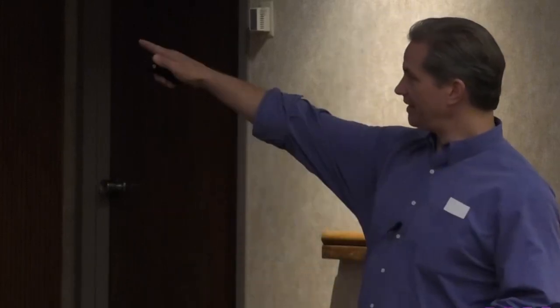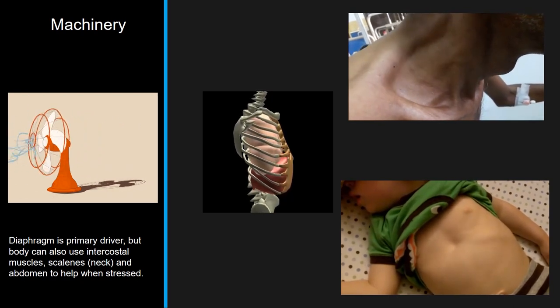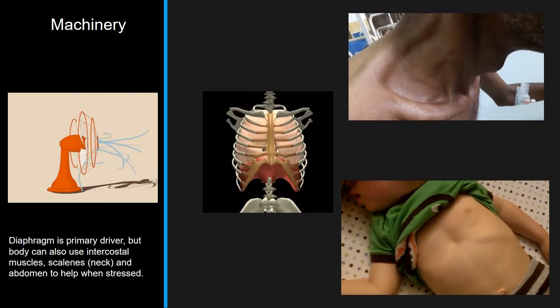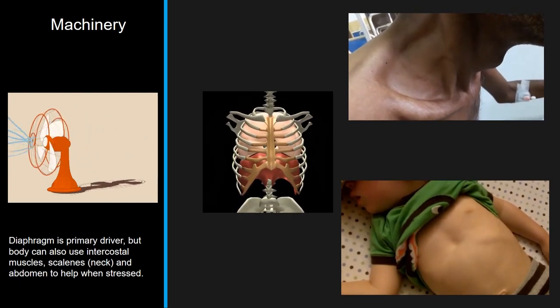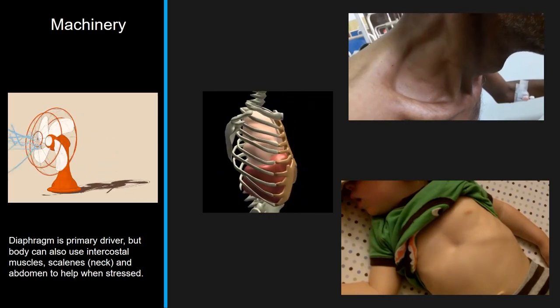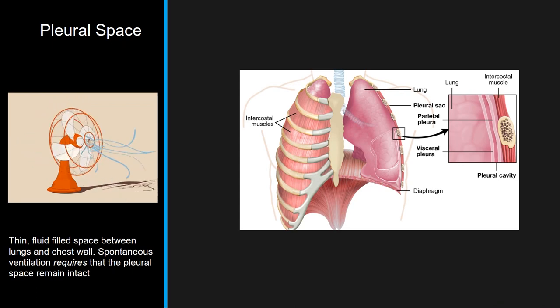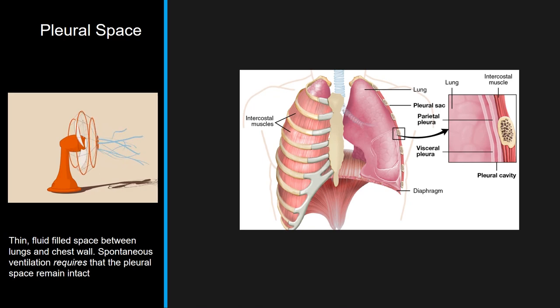You can see scalene or supraclavicular retractions in adults, and intercostal retractions in kids. The diaphragm is the primary driver; intercostals also help. Intercostal muscles pull up and there's the pleural space. If you violate that potential space, a lot of stuff can get in the middle - whether fluid, air, blood, or pus. There's a lot that can get into that space between lung and chest wall.